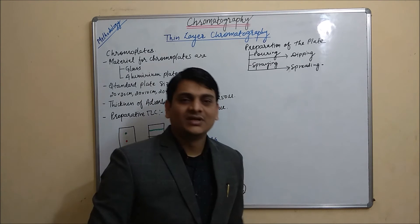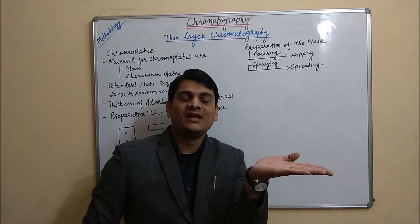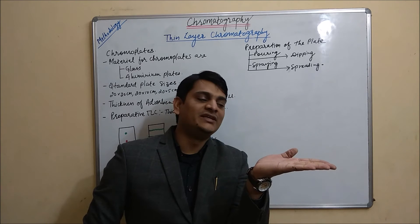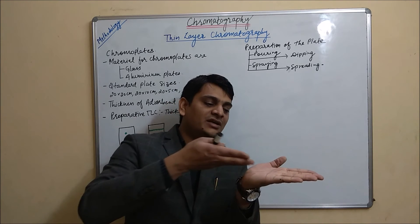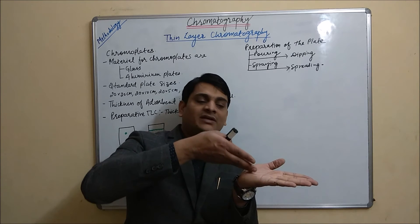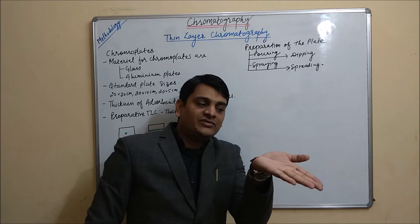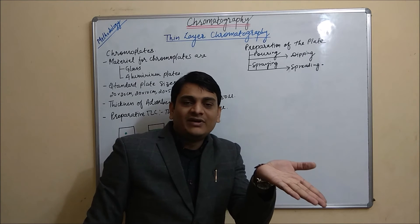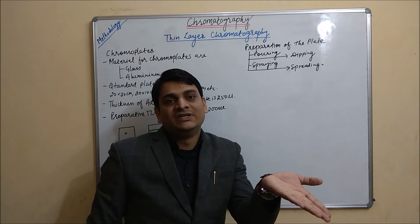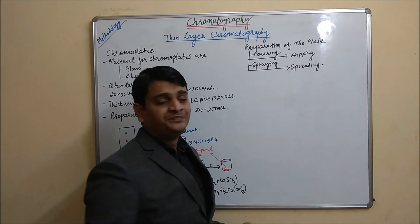In the pouring method, first we will take our plate and then pour our slurry onto the top of the plate. After pouring, we have to tilt our plate so it spreads uniformly. Then we will keep it for air drying.